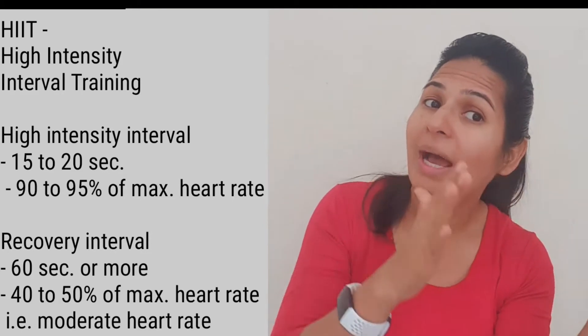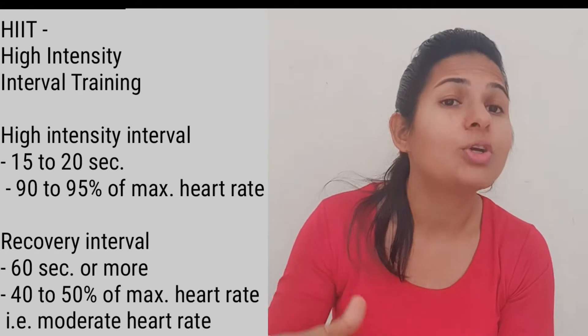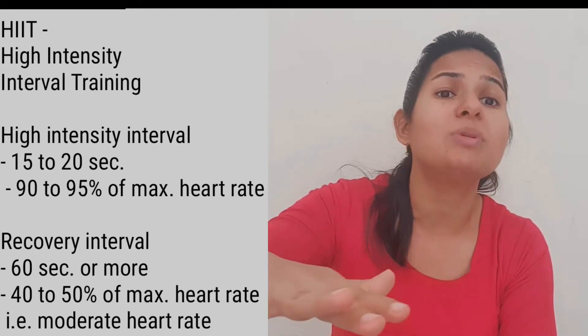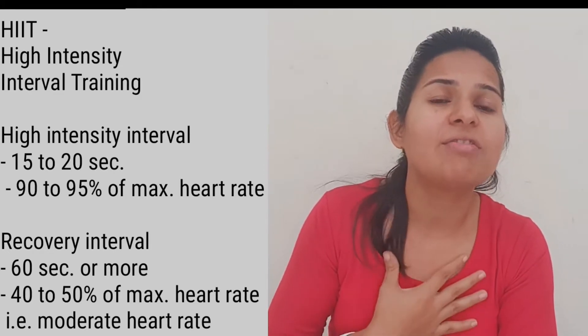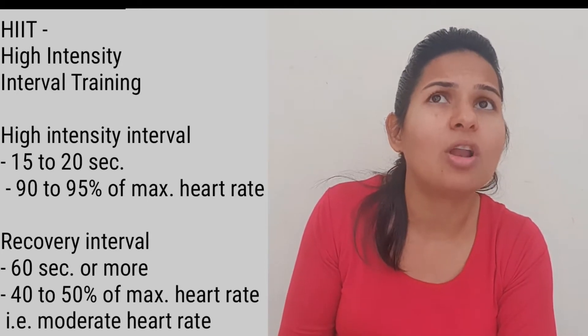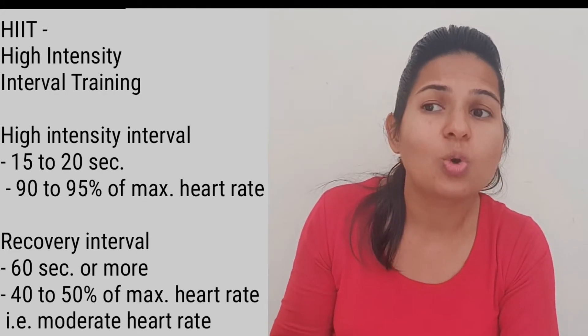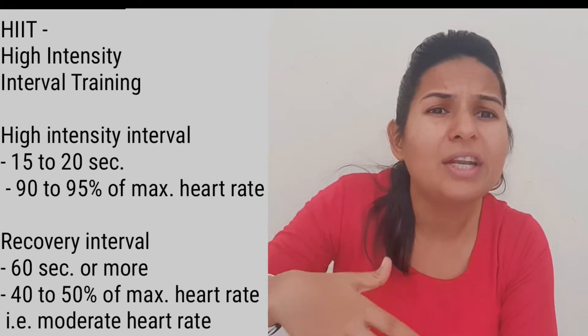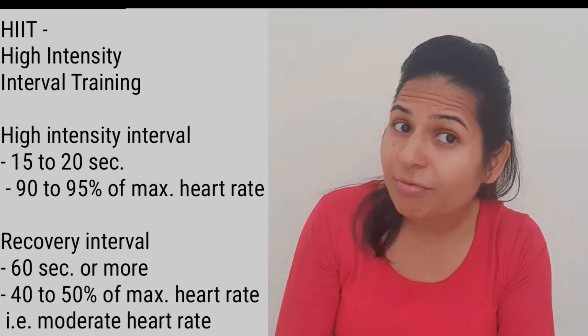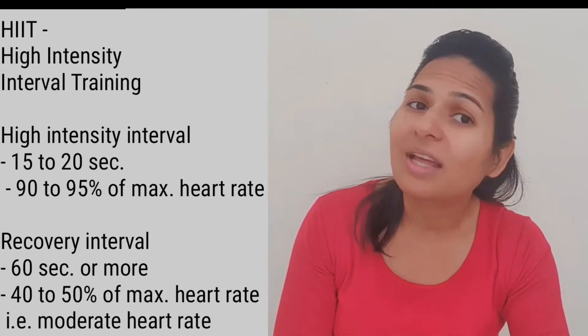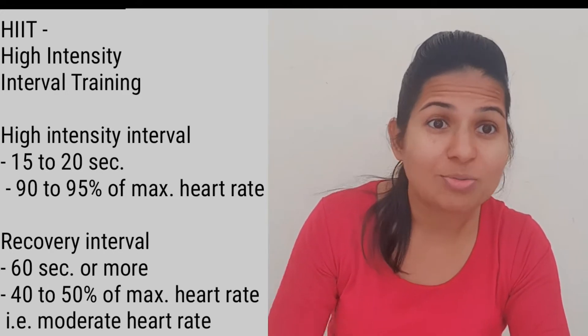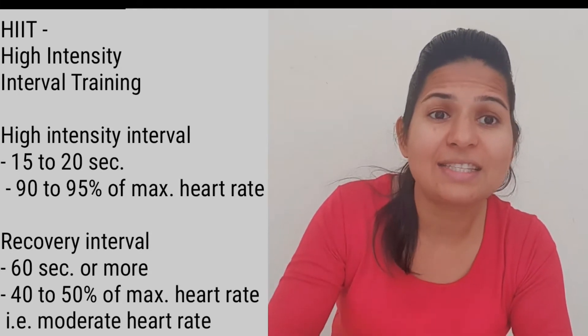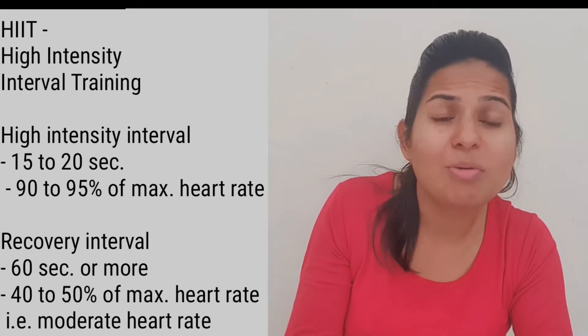Today's video is about HIIT — what it is, how it is different, and how it is beneficial. HIIT consists of a high intensity interval followed by a recovery interval. During the high intensity interval in HIIT cardio, we run at maximum speed and maximum intensity, achieving almost 90 to 95 percent of our maximum heart rate. Because of this maximum intensity, we can only continue for 15 to 20 seconds. If you are able to continue more than 20 seconds, it is not a HIIT workout. The high intensity interval can be continued for a maximum of 15 to 20 seconds only.